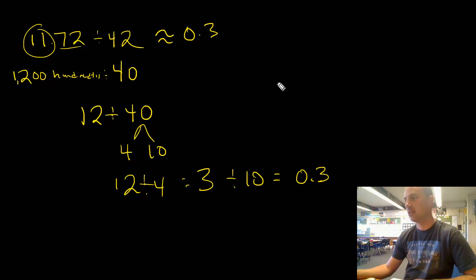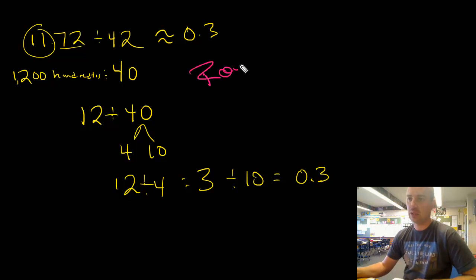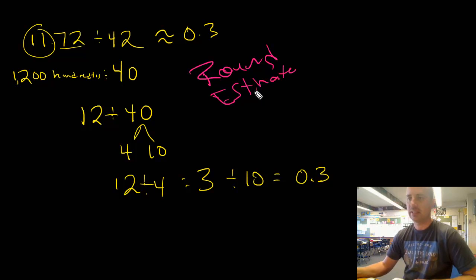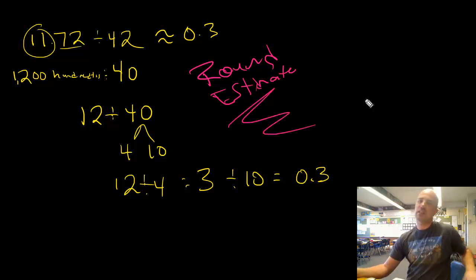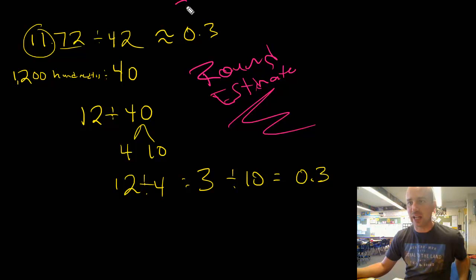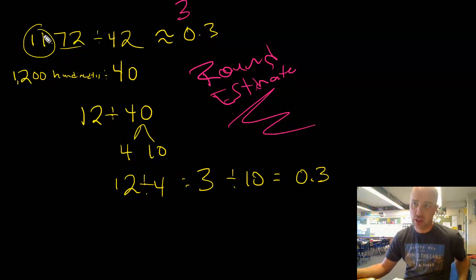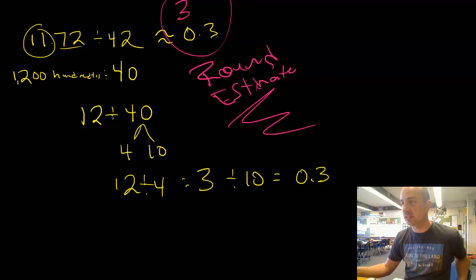Does that make sense? 42 times 3 tenths: 40 times 3 tenths is 12, and that's roughly 11.72 — yes, that checks out. So remember to round and estimate, then check the reasonableness of your answer. If you'd gotten 3 as your answer, 40 times 3 is 120 — way off. Make sure your estimated quotient makes sense. Alright, you guys rock! Good luck — post comments and questions, and catch you later!